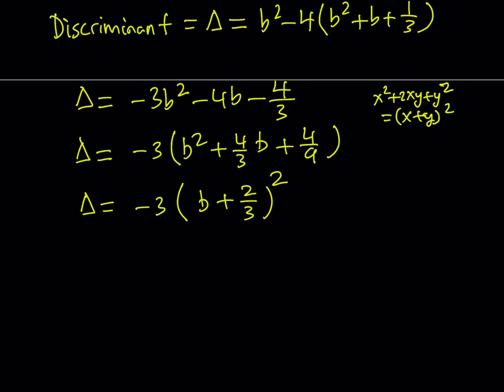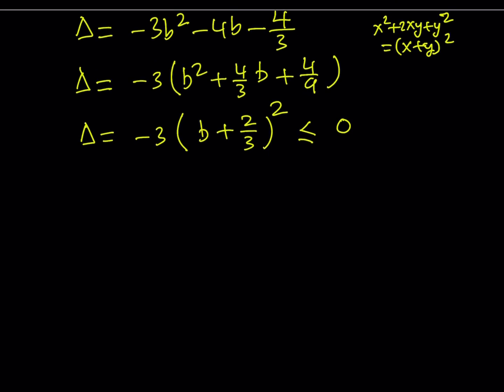So the discriminant, the delta, is equal to negative 3 times something squared. As you know, a square cannot be negative. So when you multiply something that cannot be negative by negative 3, what is that supposed to mean? That means that this expression is always going to be less than or equal to zero. That means, in this case, it cannot be positive because we multiply by negative 3.